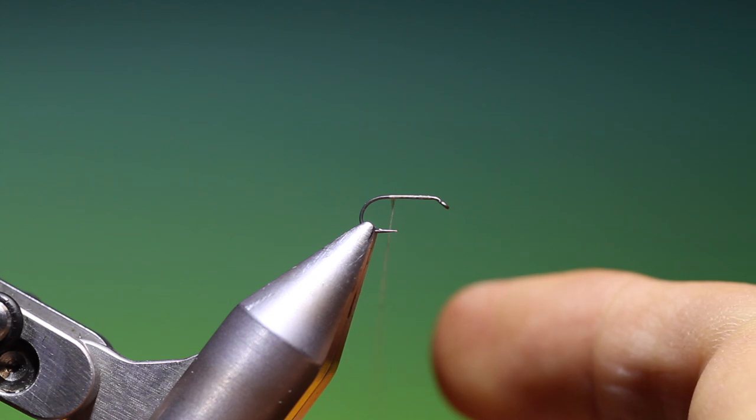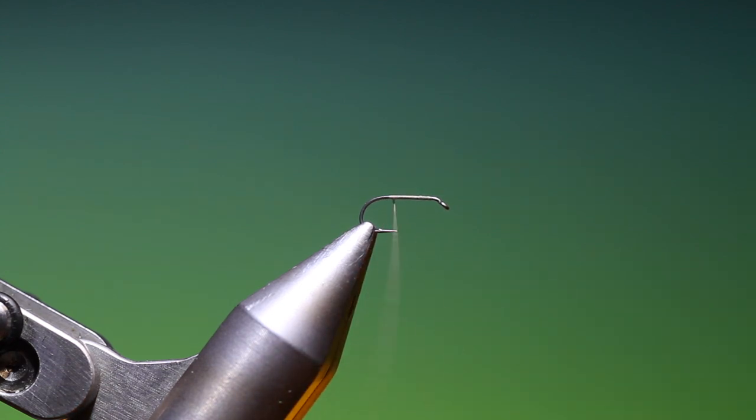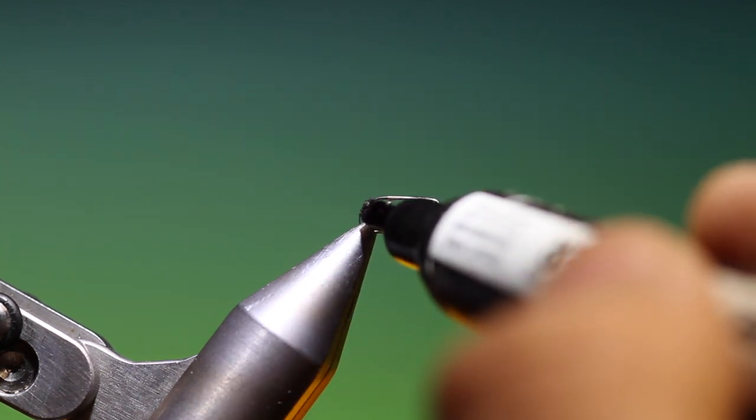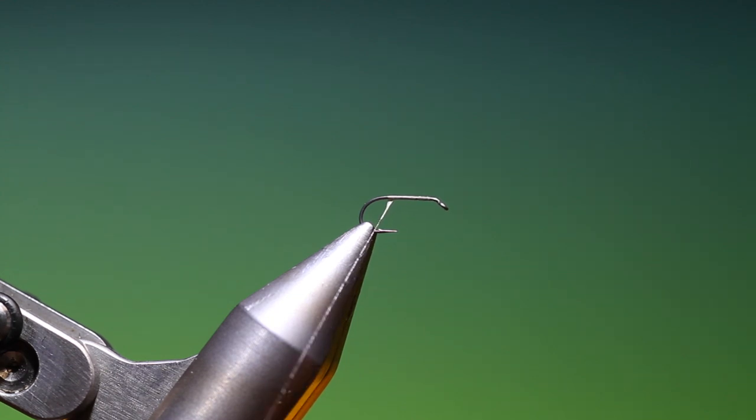And there we go. Then I want to spin my tying thread clockwise to give it a round profile. Then we take a waterproof marker pen and we color about eight centimeters for a 16 hook.